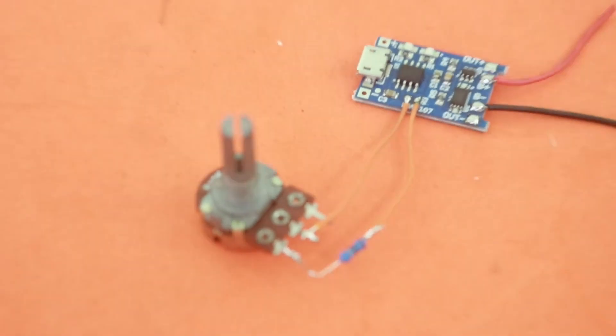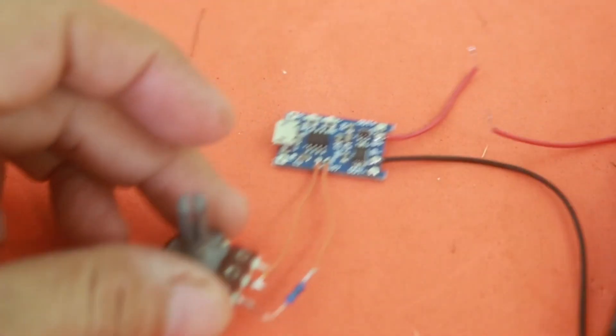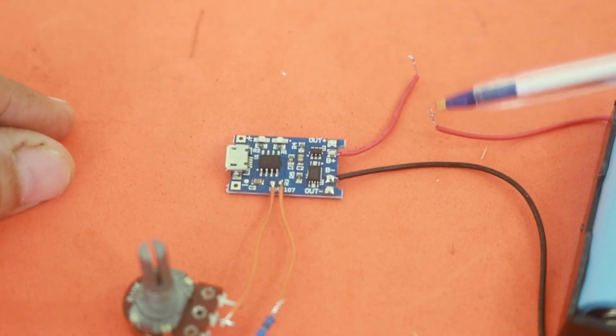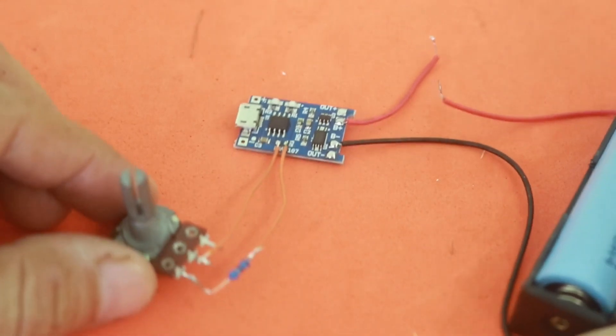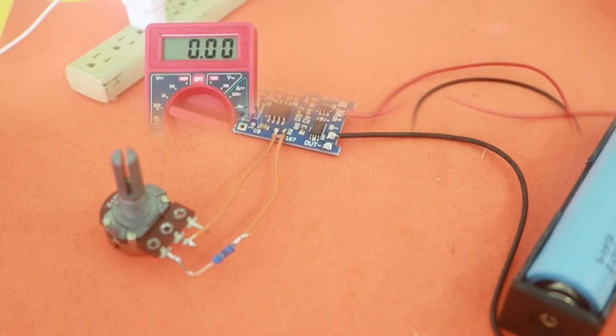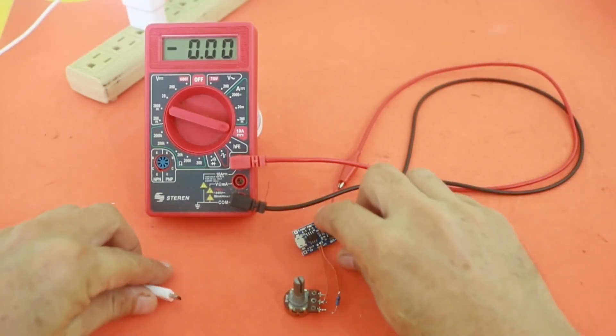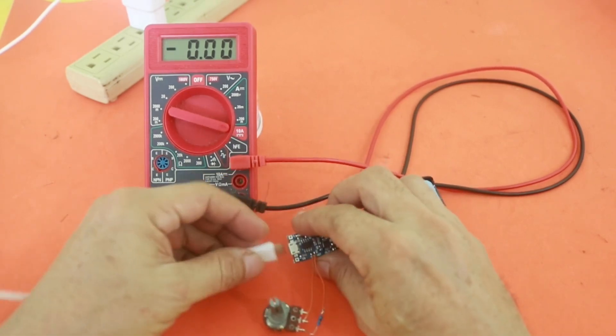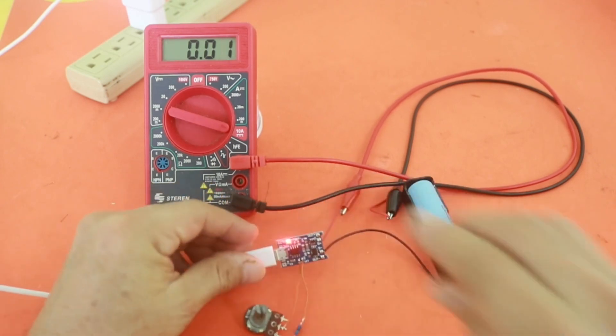So I will now connect the charger here and the multimeter to monitor the charging current. I will now connect the power to the module to start the charge.